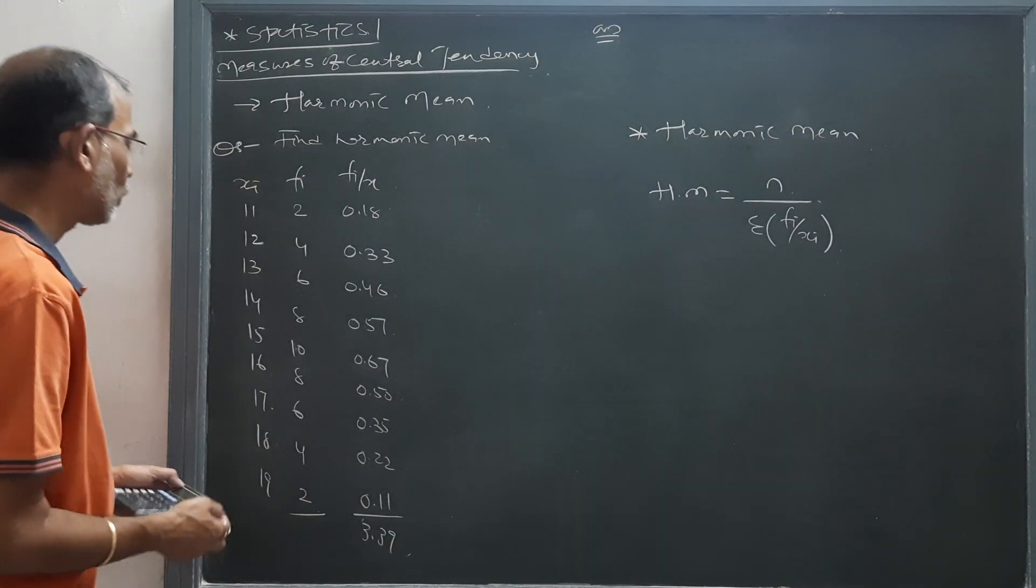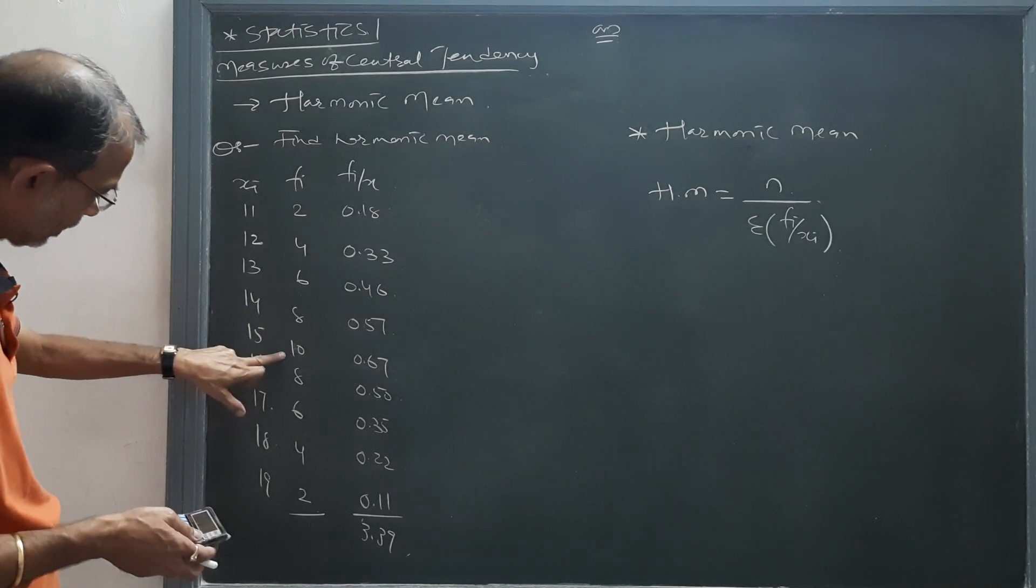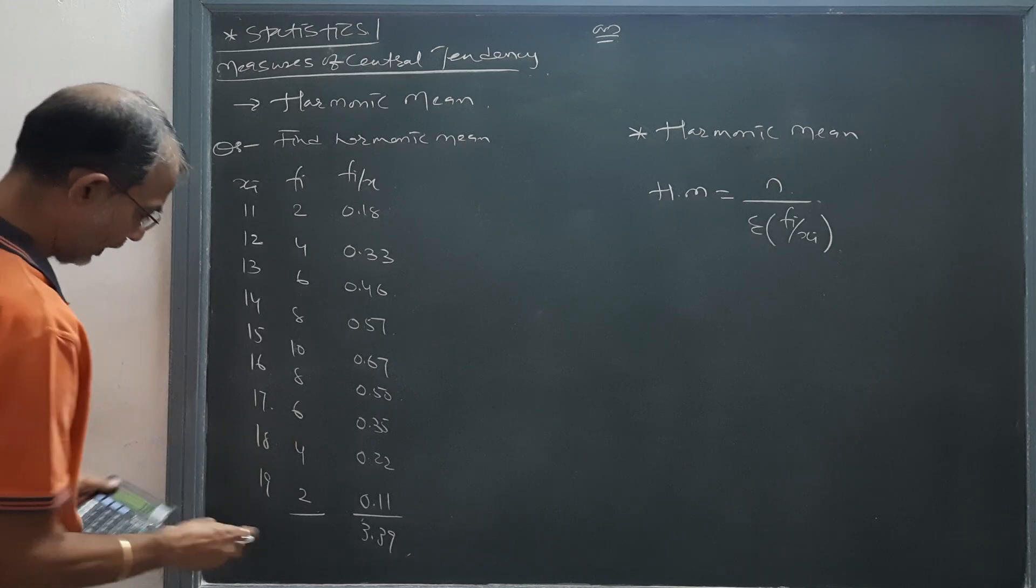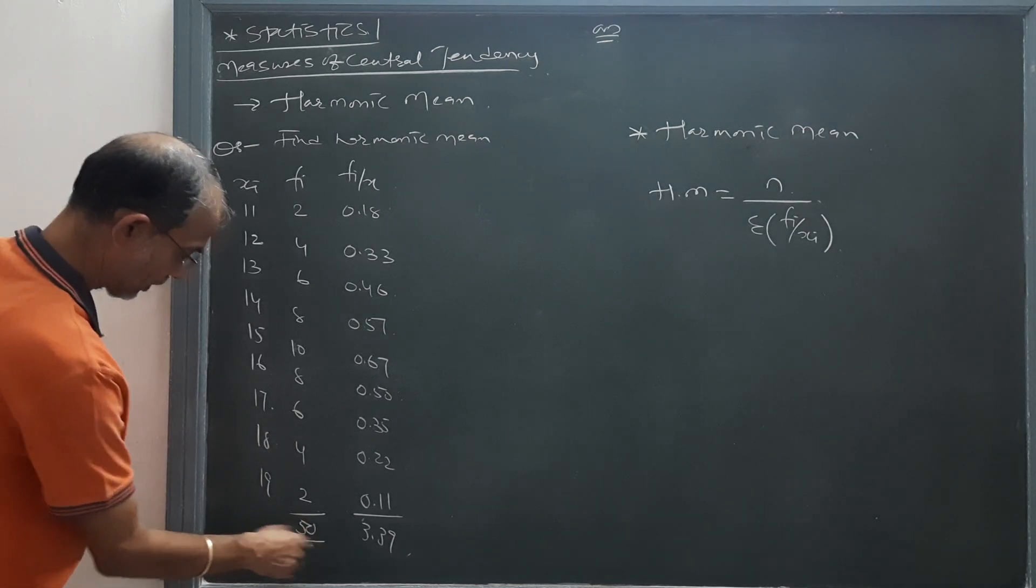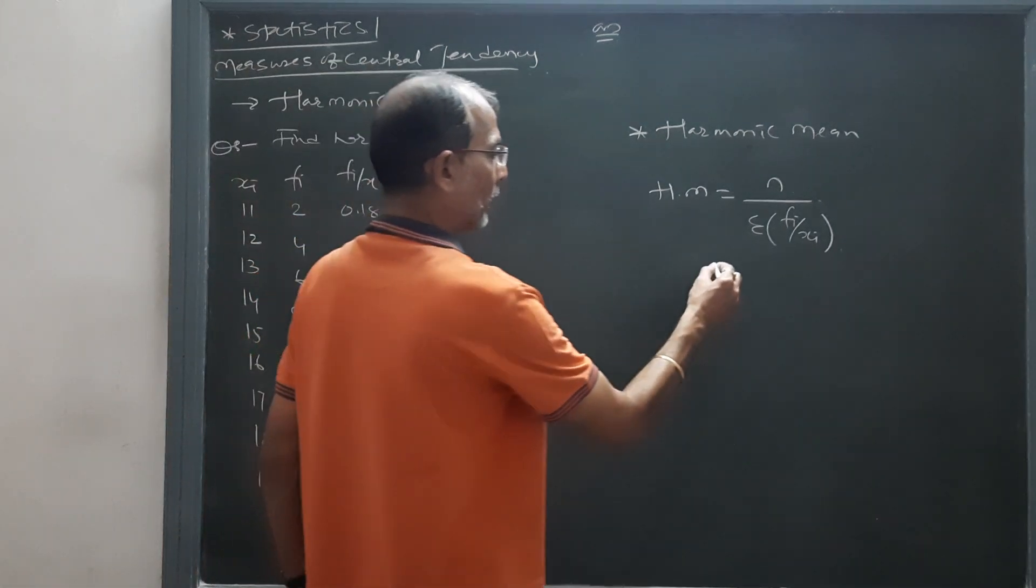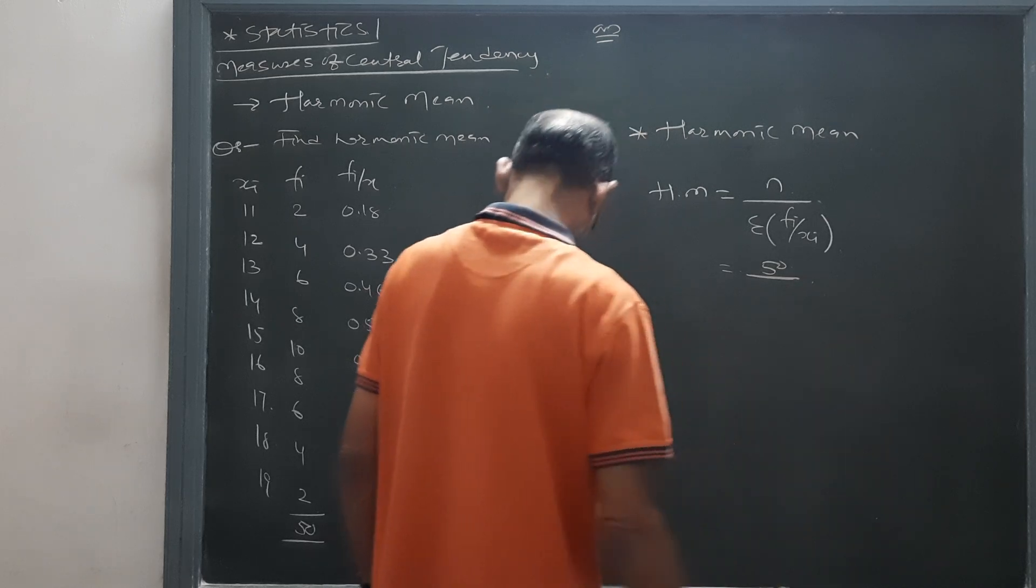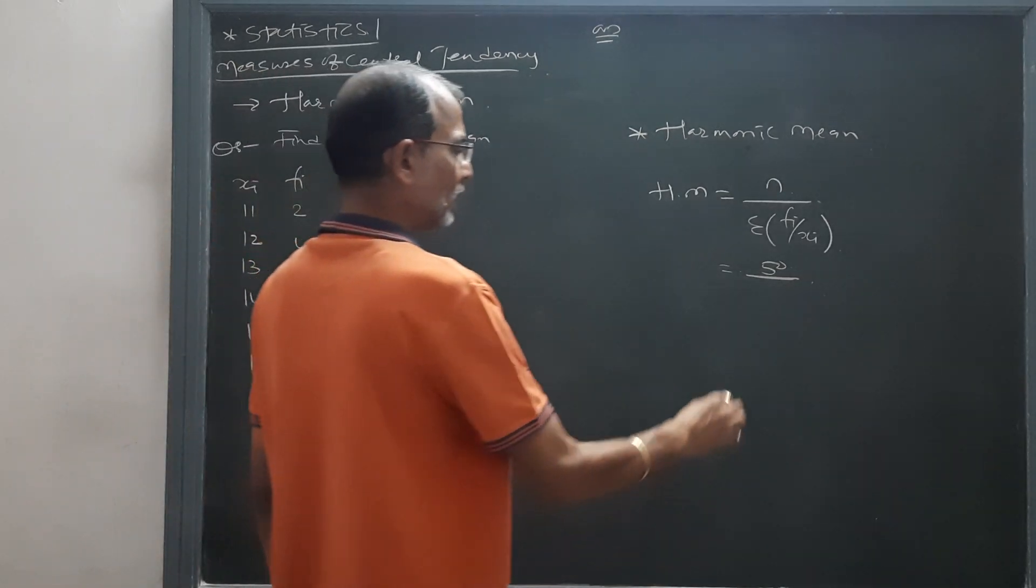And the total of n is 2 + 4 + 6 + 8 + 10 + 8 + 6 + 4 + 2, which equals 50. So if I place both these values in the formula: 50 divided by 3.39.